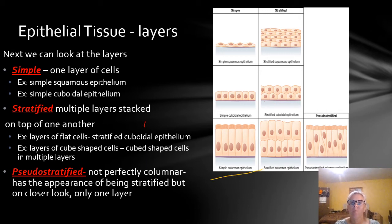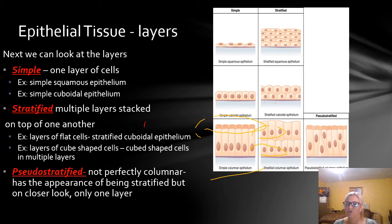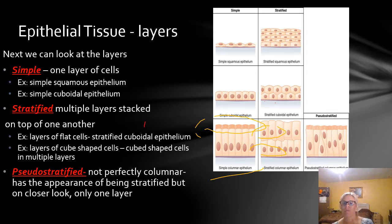In the first example here, we have simple columnar epithelium that is ciliated — it has some cilia on the top. It is definitely columnar, no question about that. Next we have stratified columnar. The nuclei don't necessarily look like they are perfectly in the middle — so that is a good example of one that kind of looks cuboidal, but is columnar. That is stratified because there are multiple layers, columnar because it is column-shaped, and epithelium because it is epithelial tissue. If it has cilia, we would want to put the word ciliated in the name.